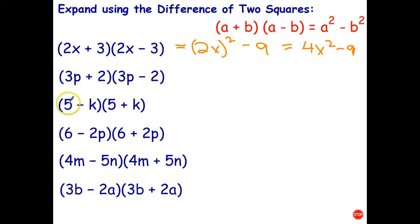I might do this one. Now in this case, I've got the variable second and the number first. That's not a problem. There's still a and I've got the subtraction first and the addition second. That's not really a problem. That's a plus b, a minus b. I've just written the plus factor first. So I can just go ahead and go 5 times 5 is 25 minus k times k is k squared.